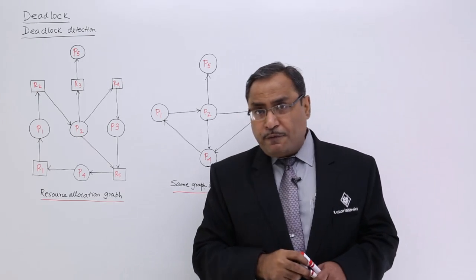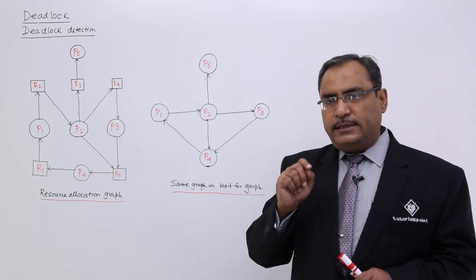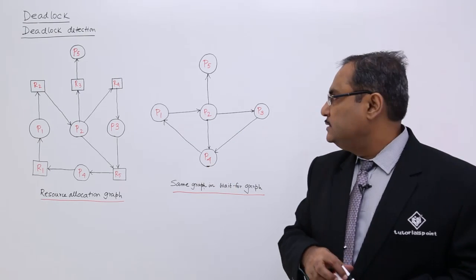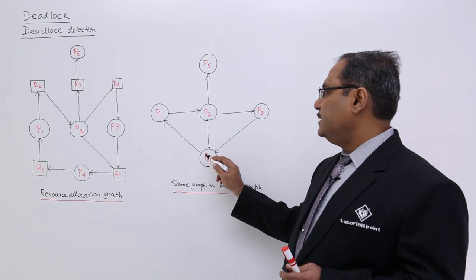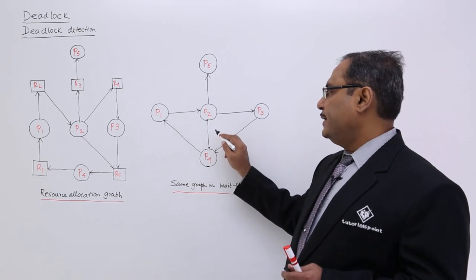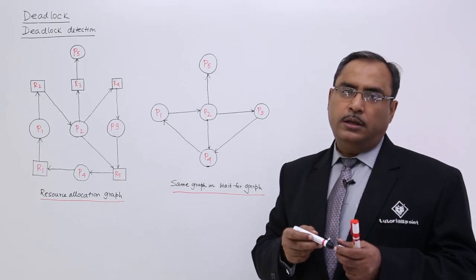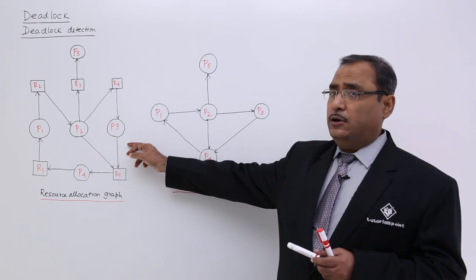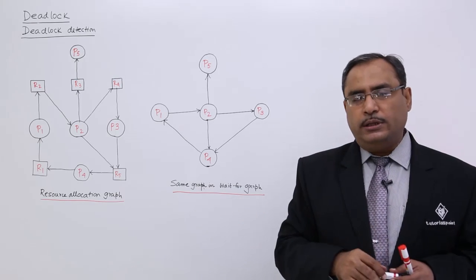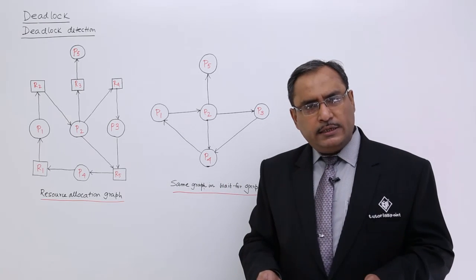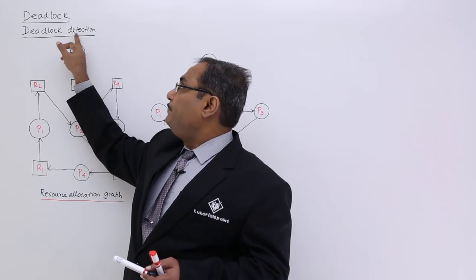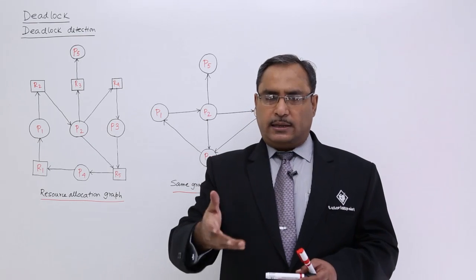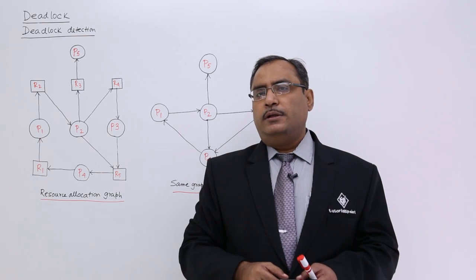In the wait-for graph, if you find a cycle with a knot, then deadlock is bound to take place. Here we have a cycle and a knot-type structure, which means deadlock is bound to occur in this system. So the resource allocation graph can predict but cannot ensure deadlock, whereas the wait-for graph can ensure whether deadlock is going to take place. If deadlock is detected, deadlock recovery routines will execute to retrieve the system from the deadlock situation. In the coming videos, we will discuss deadlock recovery. Thanks for watching.